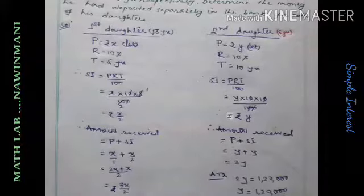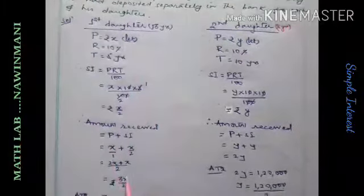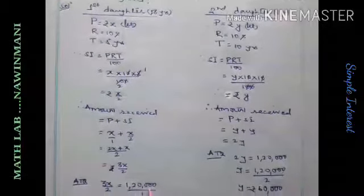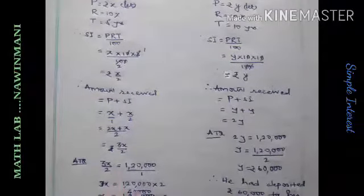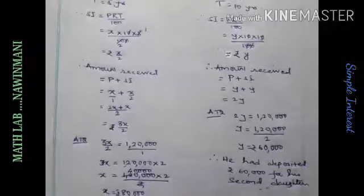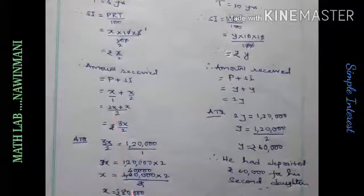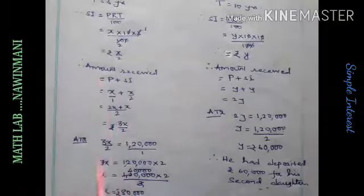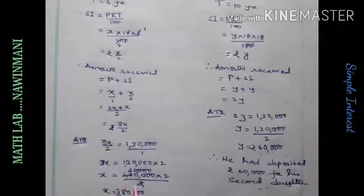And according to the question, the first daughter will receive 1 lakh 20,000. So, 3x by 2 equals 1 lakh 20,000. Then we cross multiply and we get, 3 will come down, we will cancel. And then we will get 80,000. So, first daughter, who is 13 years old, will have 80,000 deposited. And after 5 years, when she reaches 18, she will receive 1 lakh 20,000.